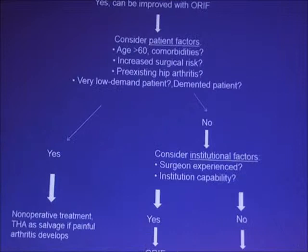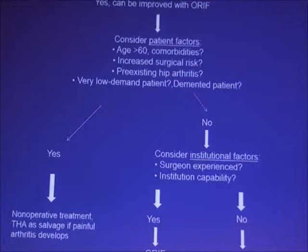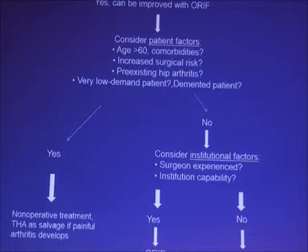If we decide to fix the fracture, we must consider patient factors: age over 60, comorbidities, increased surgical risk, pre-existing hip arthritis, and the patient's demands. We may then proceed with surgery or choose non-operative treatment for later total hip arthroplasty. If we decide to proceed, we consider institutional factors: are the surgeons experienced and familiar with these injuries? Is the institution capable of treating such injuries? If yes, proceed with open reduction. If no, transfer the patient to a level-1 trauma center with pelvic and acetabular expertise.